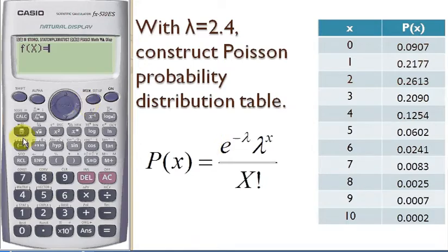That is e to the power of negative lambda. The lambda that we have is 2.4 and then multiply...